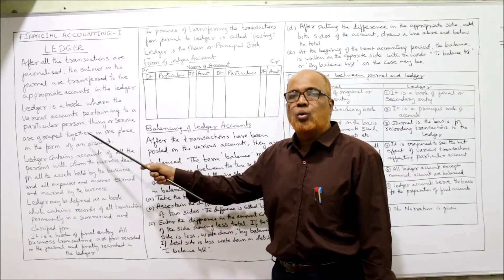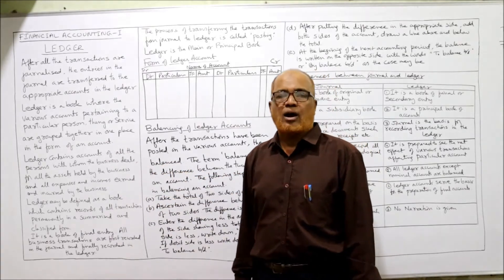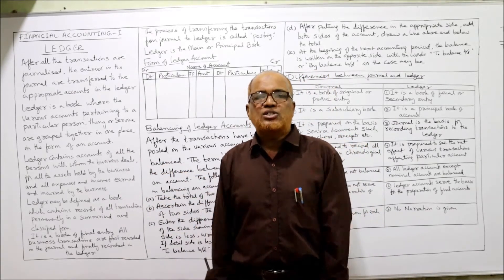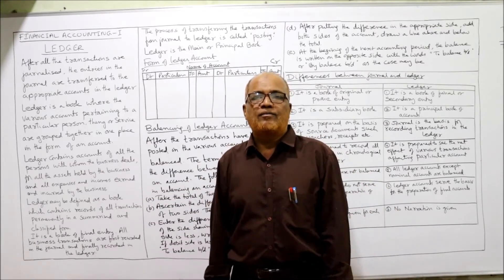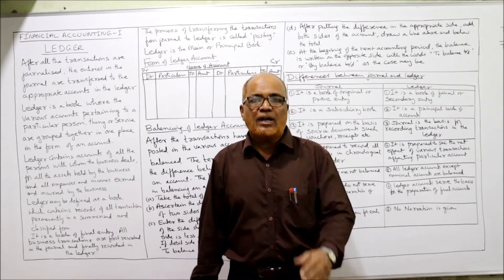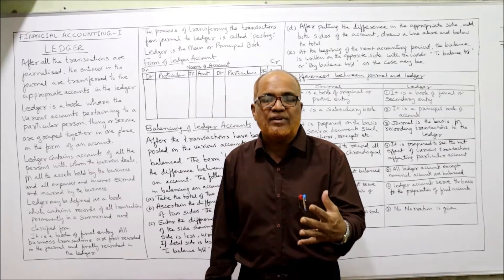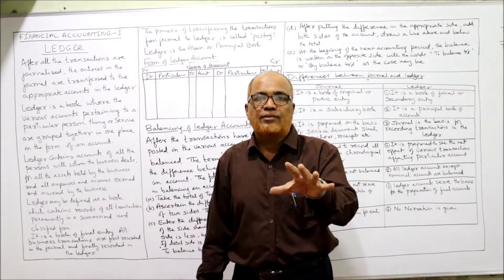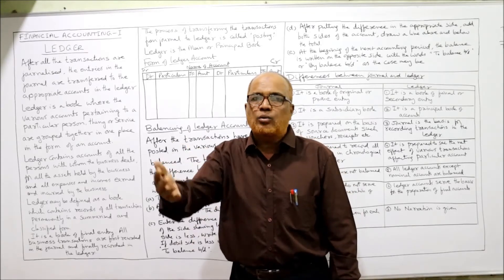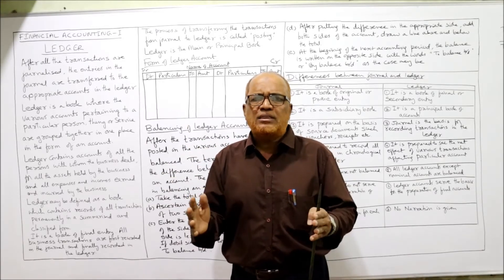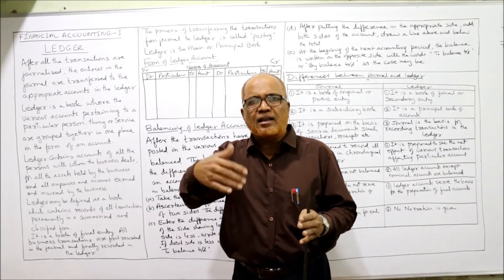The ledger is a book where various accounts pertaining to a particular person, thing, or group are brought together in one place in the form of an account. In the ledger, we open various accounts for each person, each item, or each service, all grouped at one place.